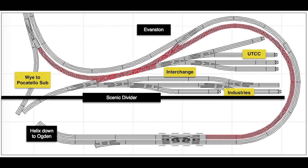I can use the two main line tracks for running trains in opposite directions at the same time. However, I can also use Main 2 — the inside main shown in red — for yard operations if I want to. When I do that, Main 1 handles both eastbound and westbound traffic.